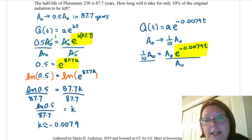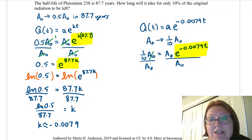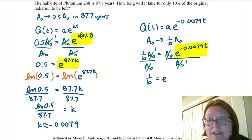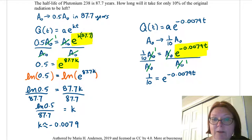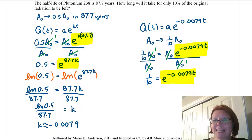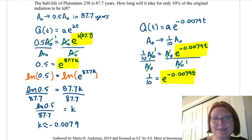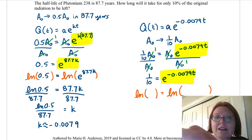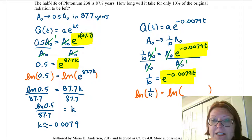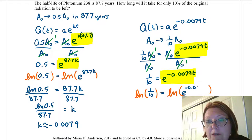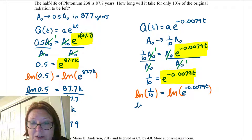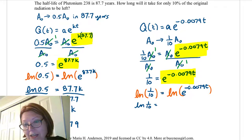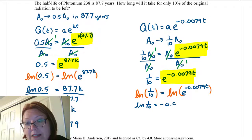Dividing by capital A sub-zero on both sides — it reduces on the left-hand side to 1, and reduces out on the right-hand side to 1 as well. No more A sub-zeros. I now have one-tenth equals e to the negative 0.0079t, with the exponential part isolated. Since the base is e, it's natural to take a natural log on both sides. Natural log of one-tenth equals natural log of e to the negative 0.0079t. On the right, ln and e are inverses, so they undo each other, leaving negative 0.0079t.